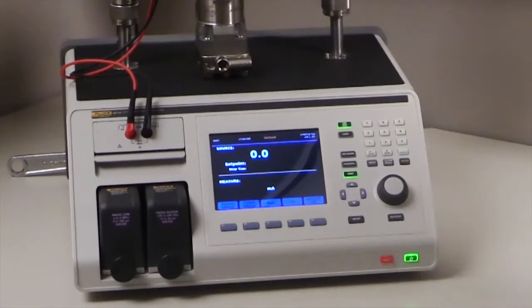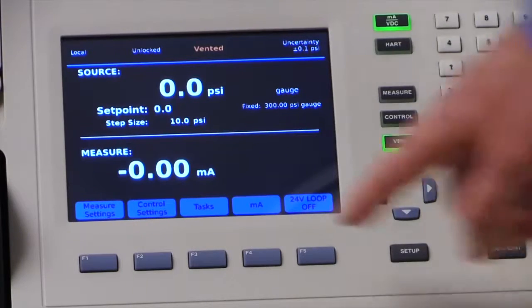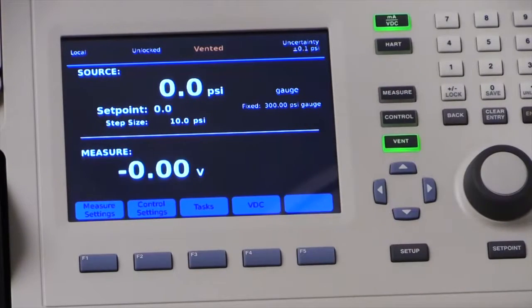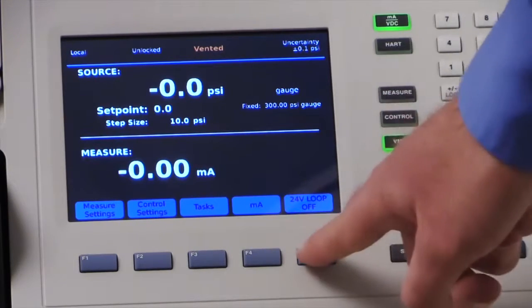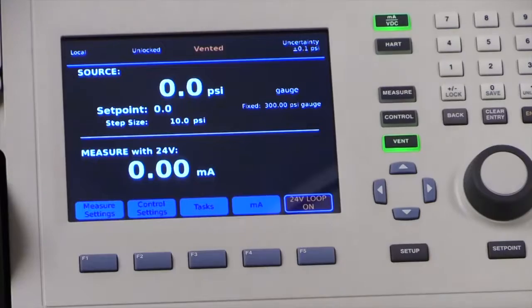To use the EMM, connect the device under test and press the mA VDC button. You can then select between measuring current and voltage, and also toggle the 24 volt loop power on and off.